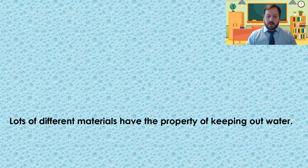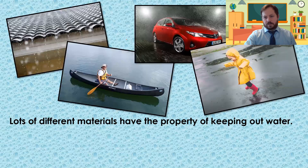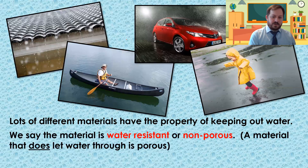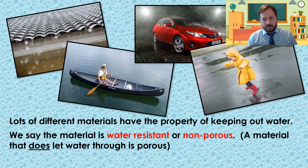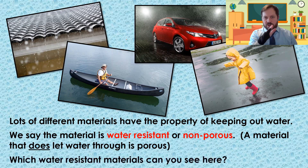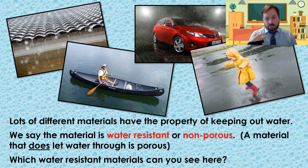Lots of different materials have the property of keeping water out. What it actually means when we say a material is water resistant — or non-porous — is that ability to keep water out. If something is porous, it does let water through. So non-porous and porous describe the ability to hold water out or let water in. We also call non-porous materials water-resistant materials. In the images here — the tiles on a roof, the body of a canoe, the body of a car, the raincoat, and the wellies — what material is being used to keep water out? Pause now and have a go.